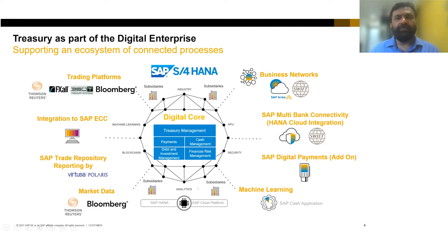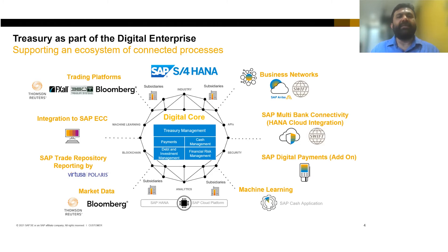On the right-hand side you see a host of external systems that can be integrated — whether banking systems, digital payments, or business networks like SWIFT. There are also external interfaces critical for treasury as a process for information inflow, so you can do risk analysis including credit risk, exposure analysis, and market risk analysis. You need external interfaces from rating agencies, trading platforms, and market information providers. SAP gives you ready-to-connect connectors for treasury, supporting the entire ecosystem of connected processes.